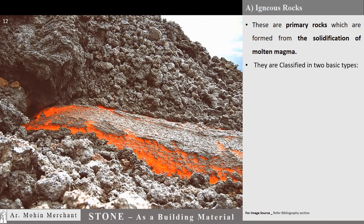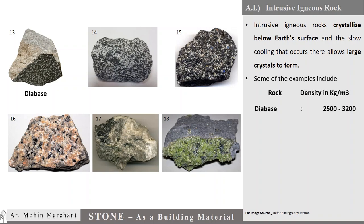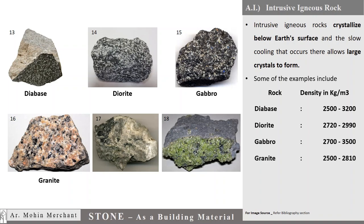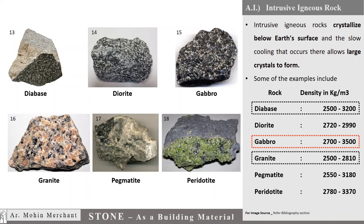Igneous rocks are further classified as Intrusive igneous rocks and Extrusive igneous rocks. Intrusive igneous rocks crystallize below Earth's surface, and the slow cooling that occurs there allows large crystals to form. Examples include Pumice, Diabase, Diorite, Gabbro, Granite, Pegmatite, and Peridotite. Density of these varies from 2500 to 3500 kg per cubic meter.